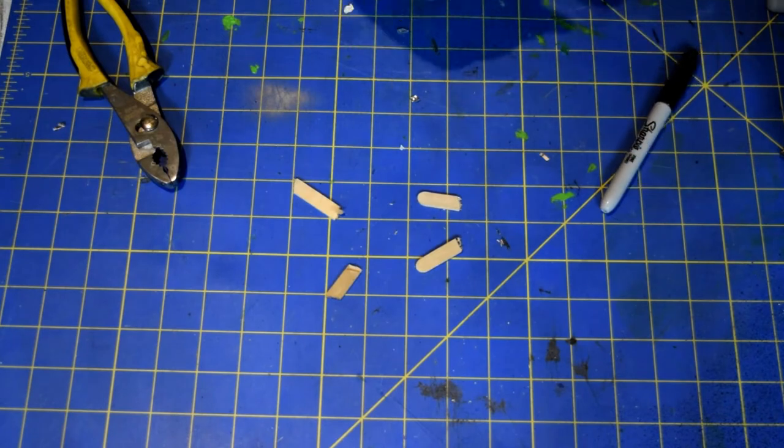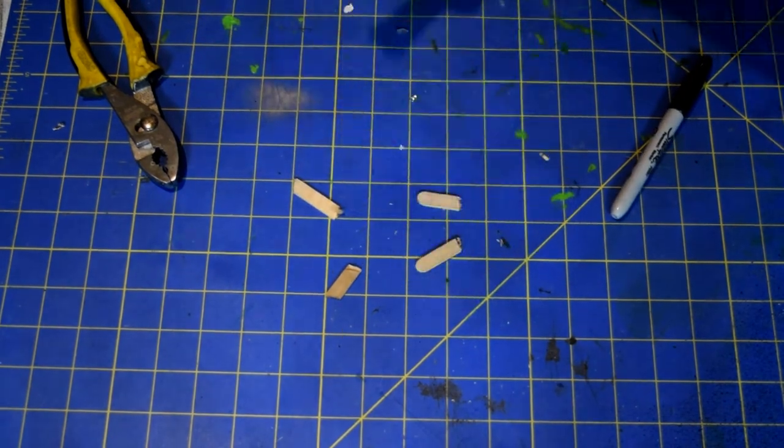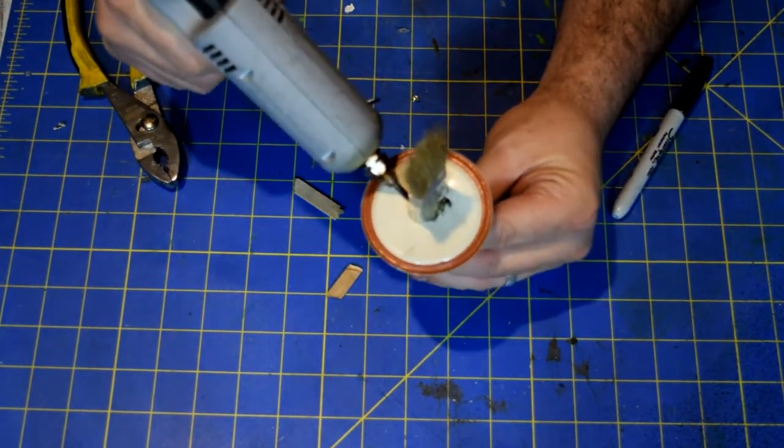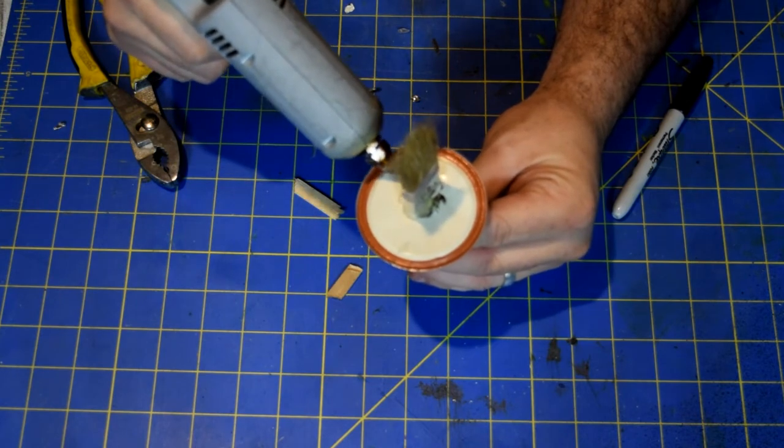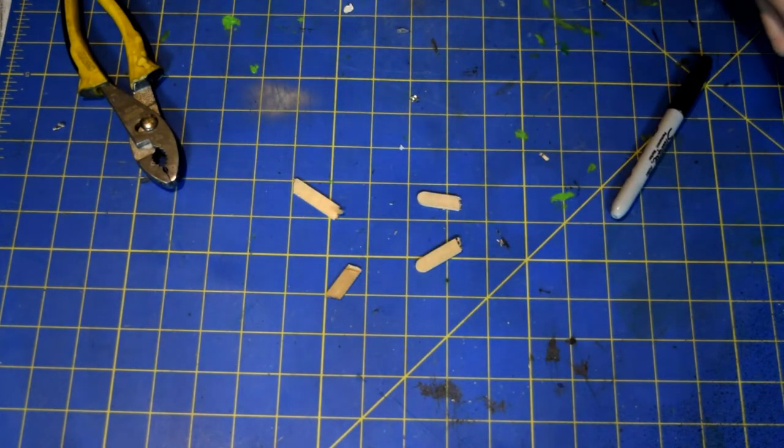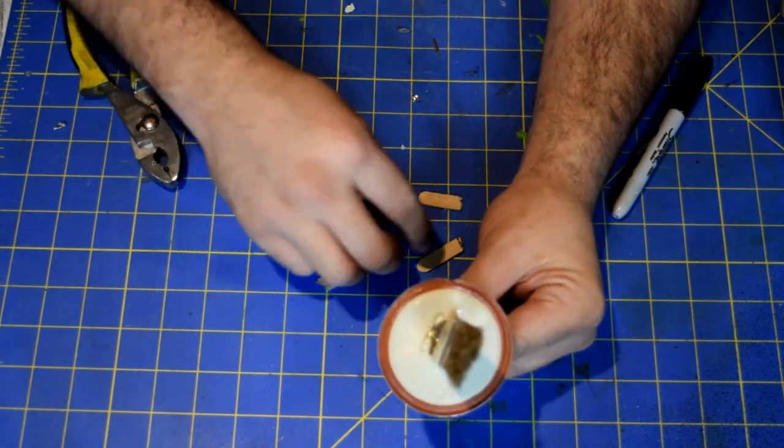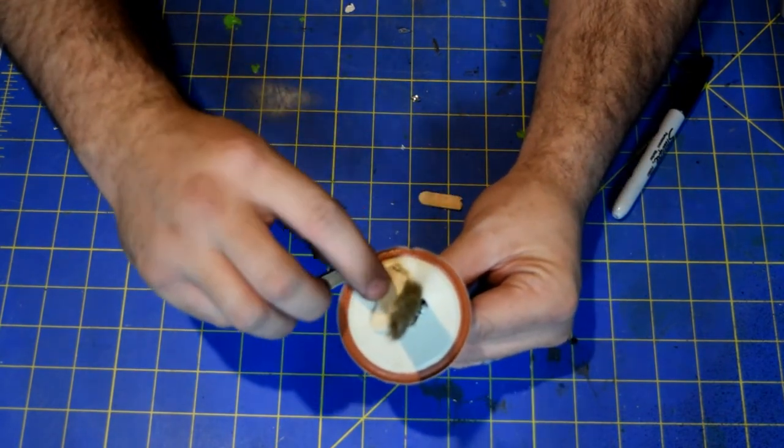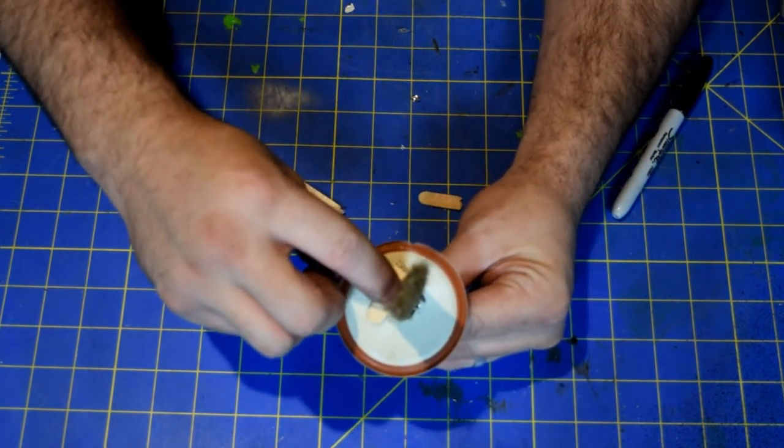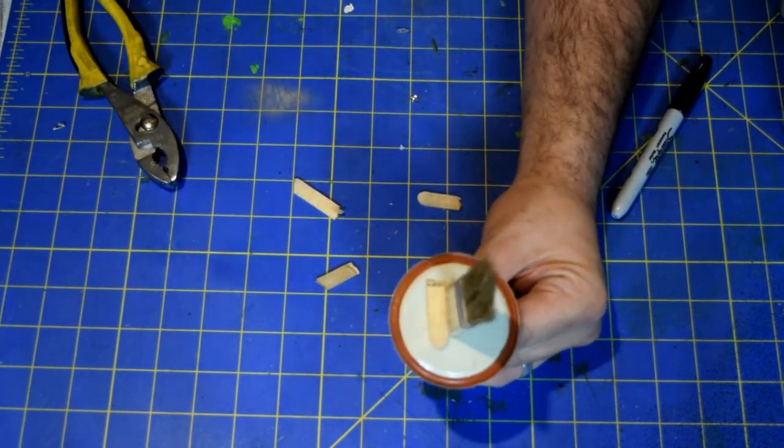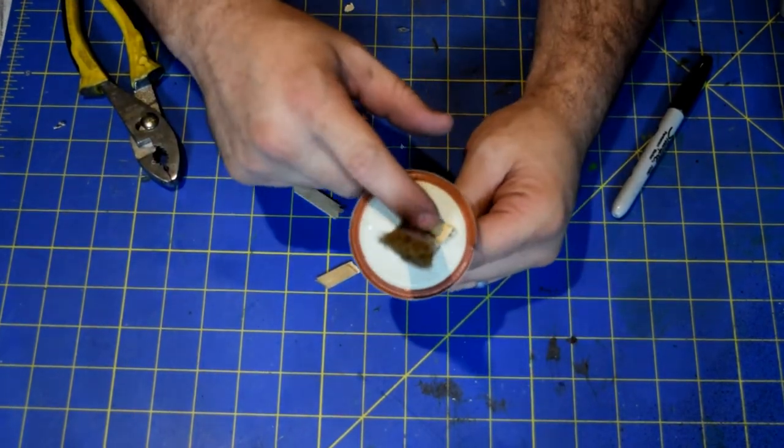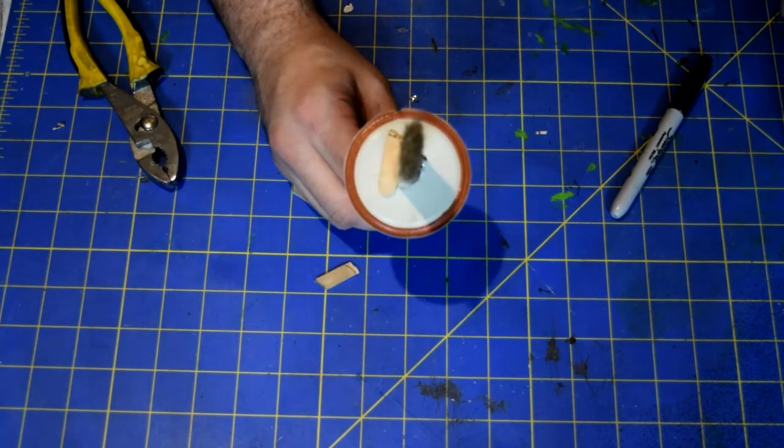Okay so now that you have these you're going to take and put just a little dab of hot glue around the edges here. And then you're going to set your little brace pieces here just right along the edge. That way it creates some nice stability and makes this a lot easier to handle.